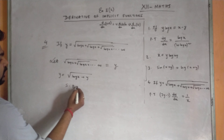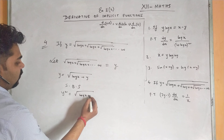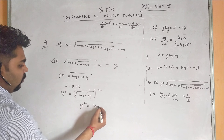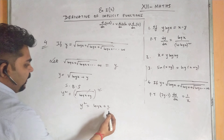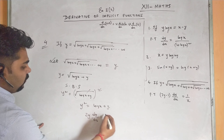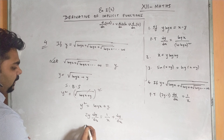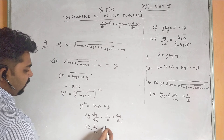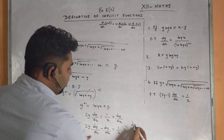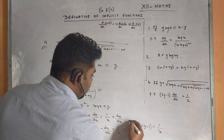Squaring both sides: y² = log x + y. Now differentiating both sides with respect to x: 2y·dy/dx = 1/x + dy/dx. Taking dy/dx to one side: 2y·dy/dx - dy/dx = 1/x, so dy/dx·(2y - 1) = 1/x. This equals the RHS, thus proved. dy/dx = 1/x divided by (2y - 1).